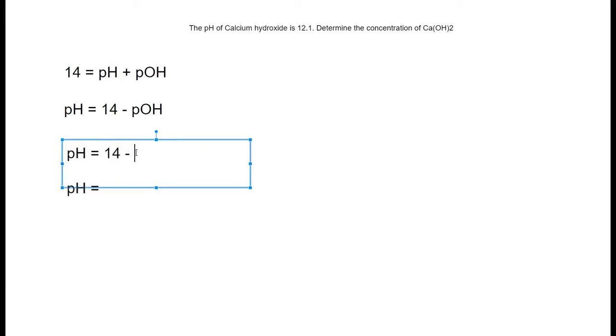Since we have 14 minus, we have to put the pOH. pOH is 12.1. When you do the calculation, it turns out to be 1.9.